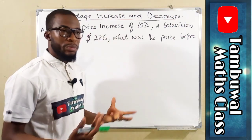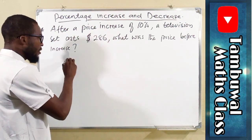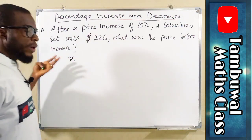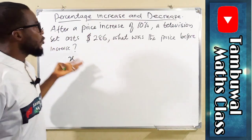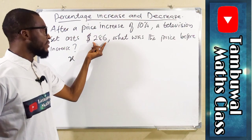Since we don't know the price before increase, we can let it be X. So X is the initial price before it was increased by 10% to result to $286.